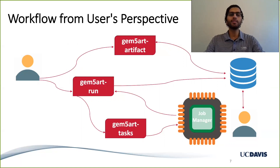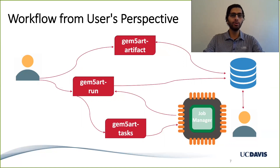All of the user's interaction with Gem5Art libraries happens through Python scripts called launch scripts, which we have found to be short in length — on average 150 lines of code for most popular benchmark suites. The majority of those lines actually involve feeding the user attributes of the artifacts they want to use for the experiment.